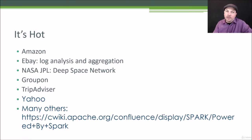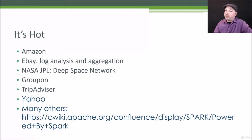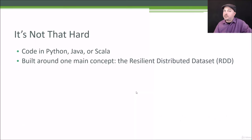Spark is a very hot technology — relatively young, still emerging and changing quickly. But a lot of big companies are using it: Amazon, eBay, NASA's Jet Propulsion Laboratory, Groupon, TripAdvisor, Yahoo, and many more. There's a list on the Spark Apache Wiki page of known big companies using Spark to solve real-world data problems. If you're worried about being on the bleeding edge, fear not — you're in very good company, and it is pretty stable stuff at this point.